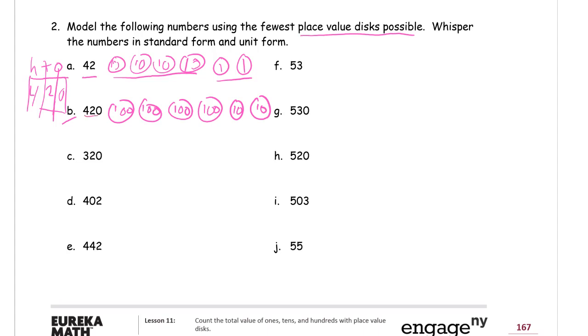If I did this all in tens, it would be 42 tens. That would be 42 disks. But here, if I use hundreds and tens, I have 1, 2, 3, 4, 5, 6, I have only 6 disks. So this is 420, and the unit form is 4 hundreds, 2 tens.